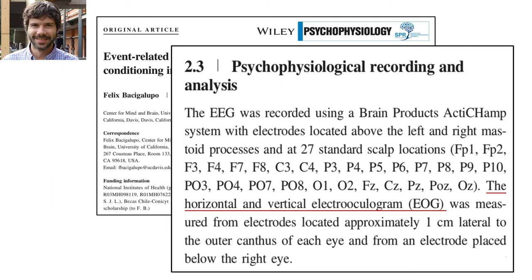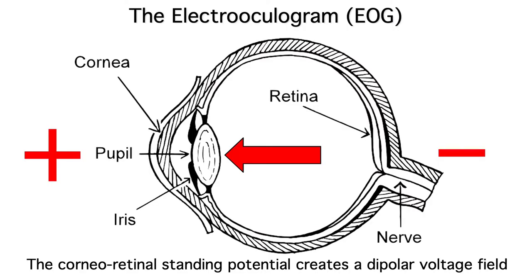The EOG is a consequence of the fact that there's a standing electrical potential between the front and back chambers of the eye. You get positive at the front of the eye and negative at the back of the eye, creating an equivalent current dipole. This dipole creates a strong voltage that spreads to the scalp.